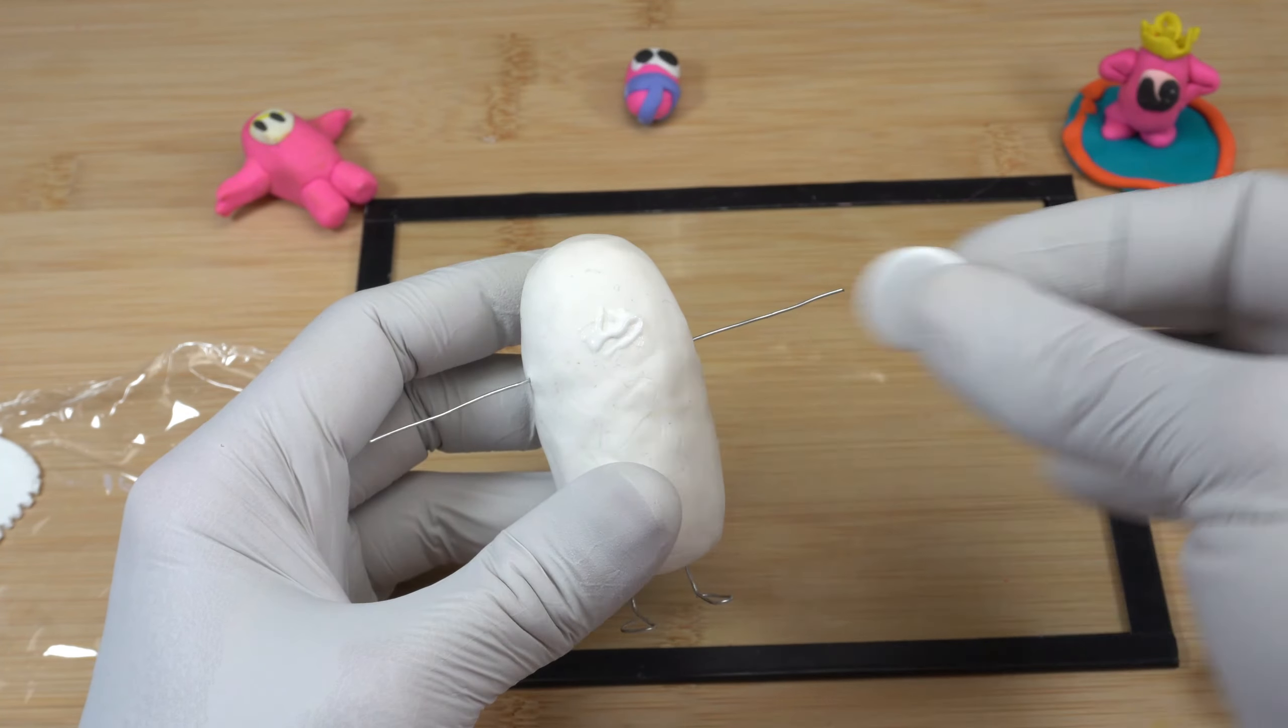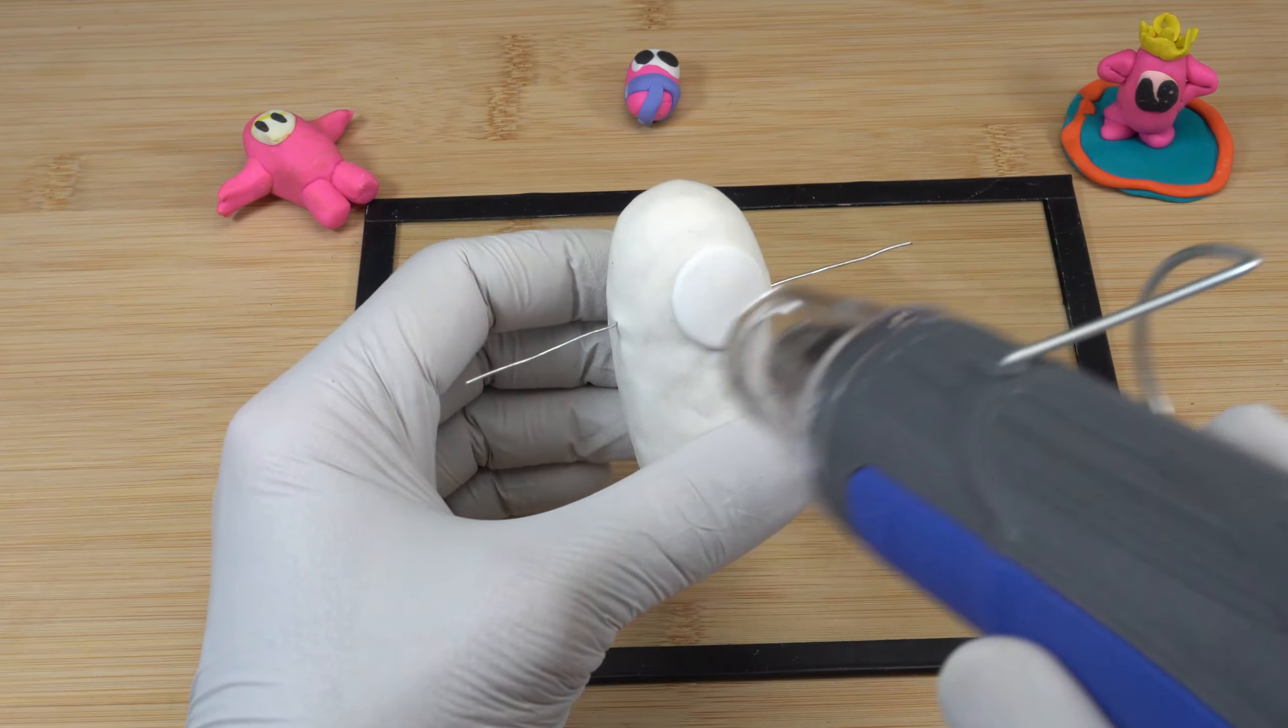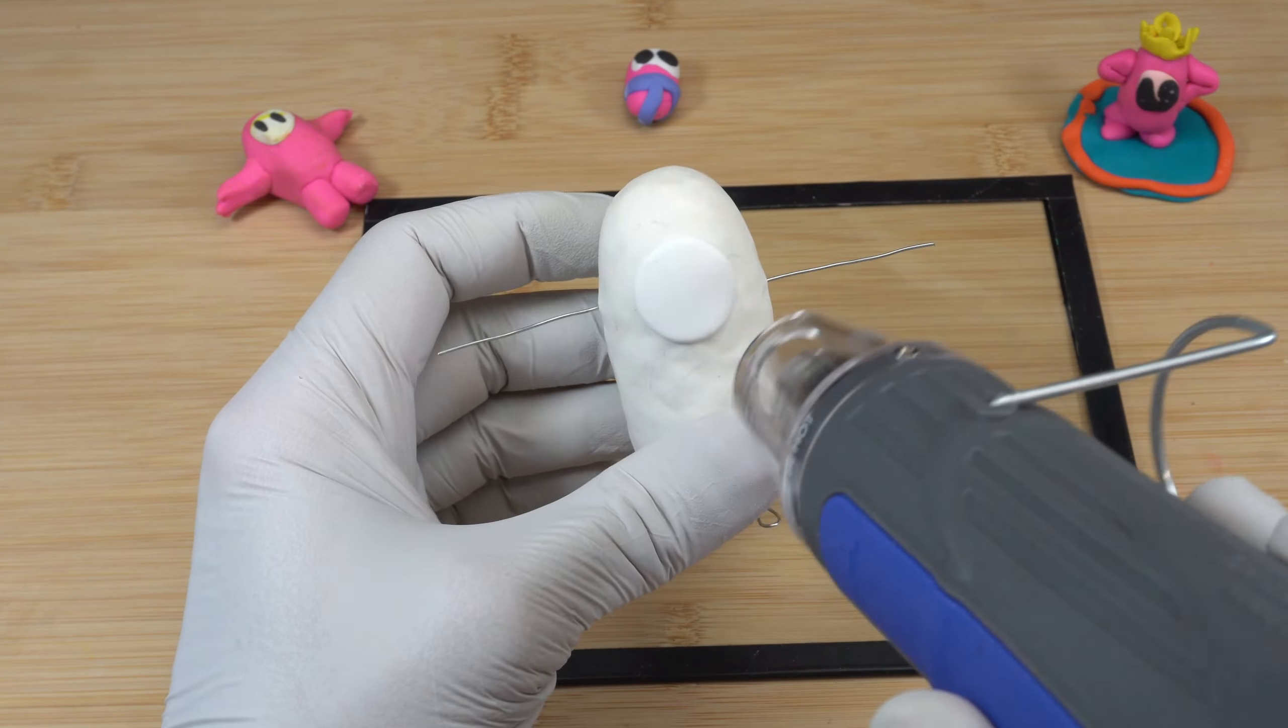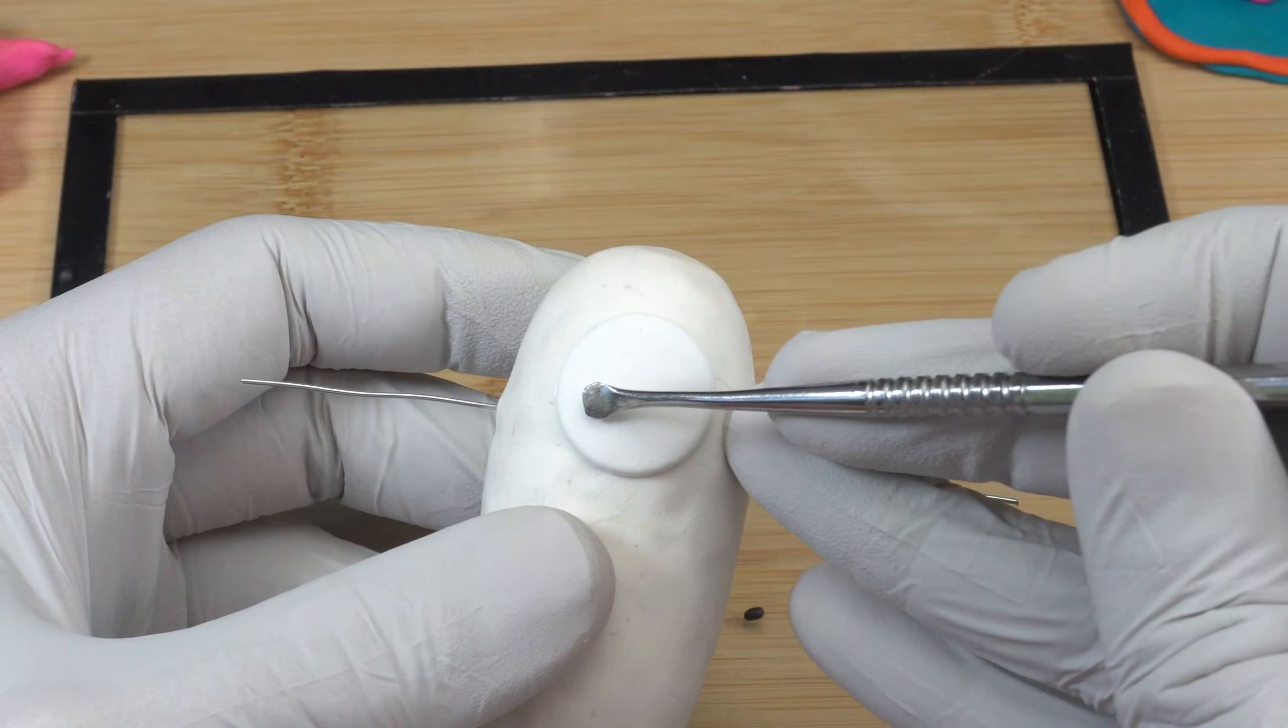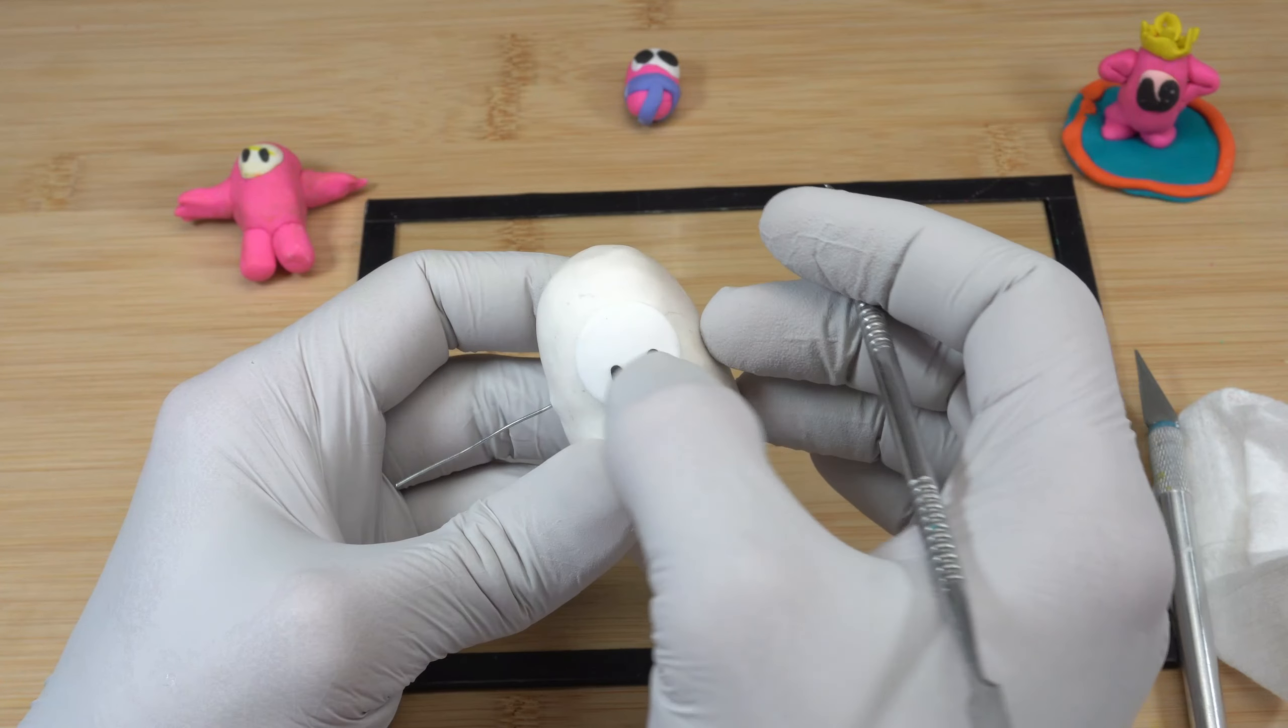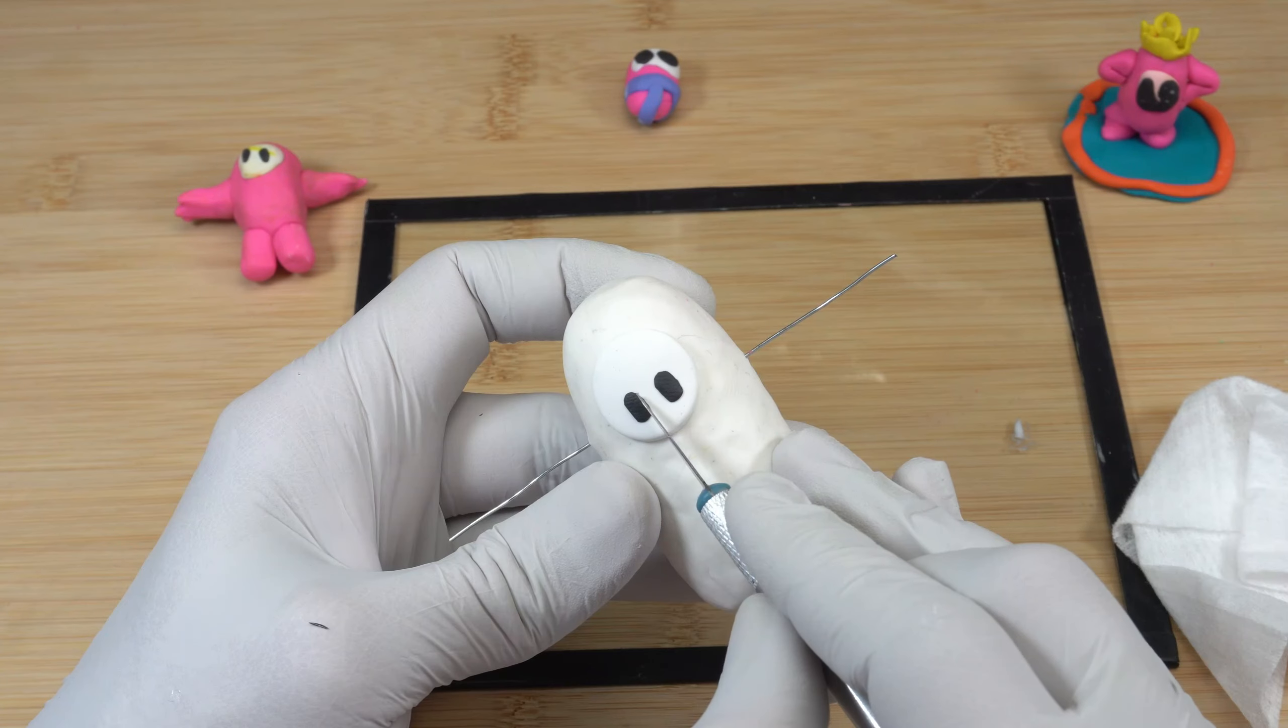I'm using bake and bond to add the face. Then I'm doing a quick bake using the heat gun. Now I'm creating the eyes using two small balls of black clay. I'm trimming the eyes, cutting up some clay.